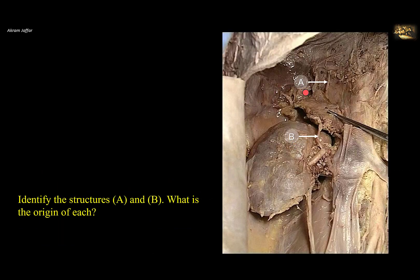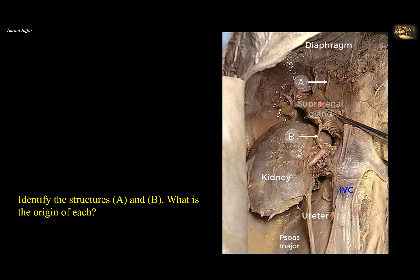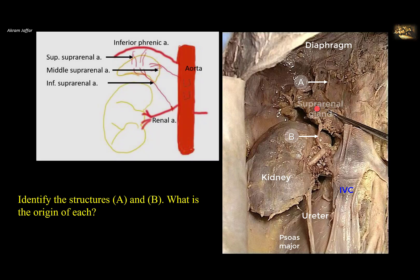Identify the structures A and B — what is the origin of each? Here you can see the suprarenal gland, right suprarenal, and the right kidney. Here is the inferior vena cava, which is more to the right, and you can see the ureter here over the psoas major muscle. Above is the diaphragm. The suprarenal gland, being an endocrine gland, has a profuse blood supply. Each suprarenal gland has three sources of arterial blood supply, but it is drained by a single vein.